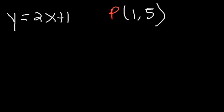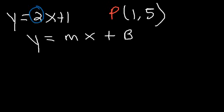Well, for this particular example, let's use the slope-intercept form, which is y is equal to mx plus b. m represents the slope, which is rise over run, and b is the y-intercept. You need to realize that the slope of the other line is 2, and parallel lines have the same slope.